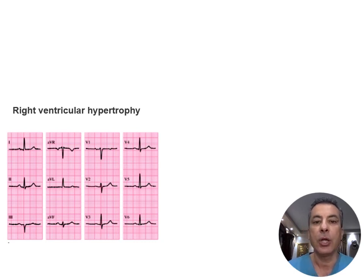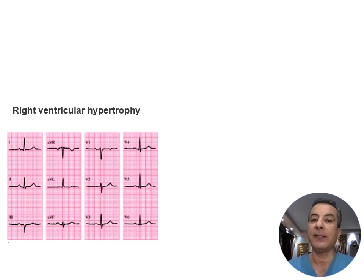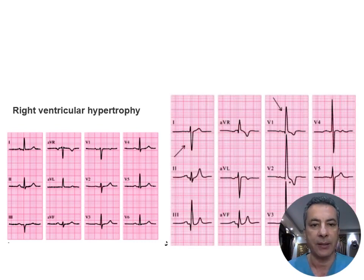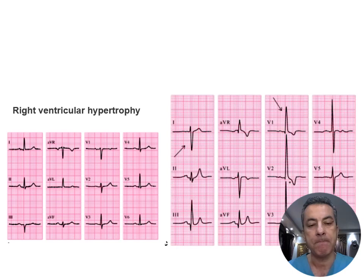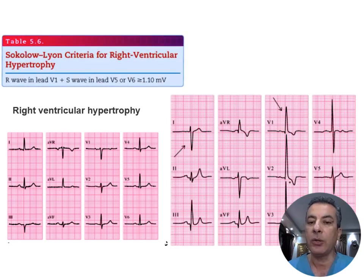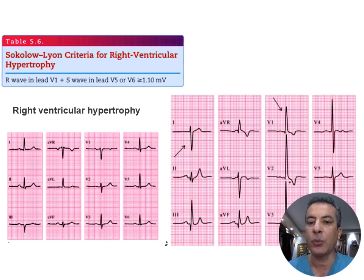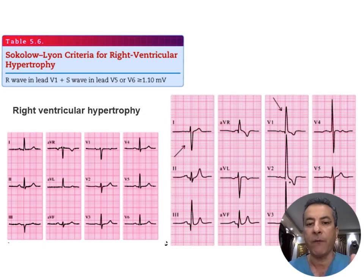Following QRS duration, Q waves, and axis, check QRS amplitude to address ventricular hypertrophy. For right ventricular hypertrophy, there is a prominent R wave in lead V1 and a deep S wave in leads I, V5, and V6. The Sokolow-Lyon criteria are employed: if the sum of the amplitudes of the R wave in V1 and the S wave in either lead I, V5, or V6 exceeds 1.1 mV (11 small squares), it confirms the presence of right ventricular hypertrophy.